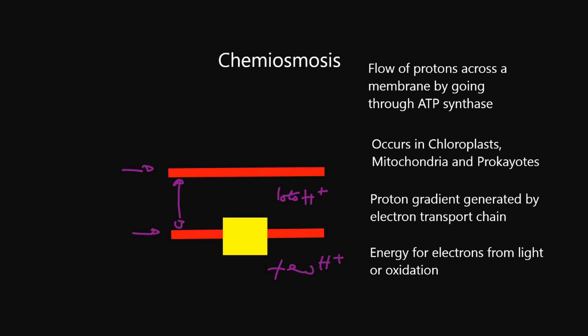Those hydrogen ions flow through hydrophilic channels which are in the enzyme ATP synthase. As they flow through, the enzyme rotates and it takes adenosine diphosphate and adds a phosphate to turn it into adenosine triphosphate.